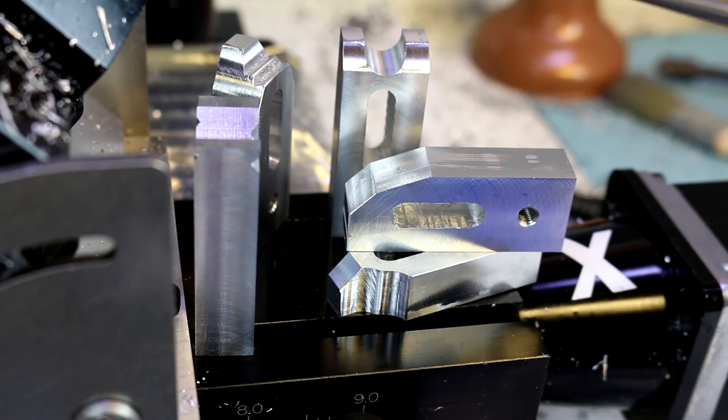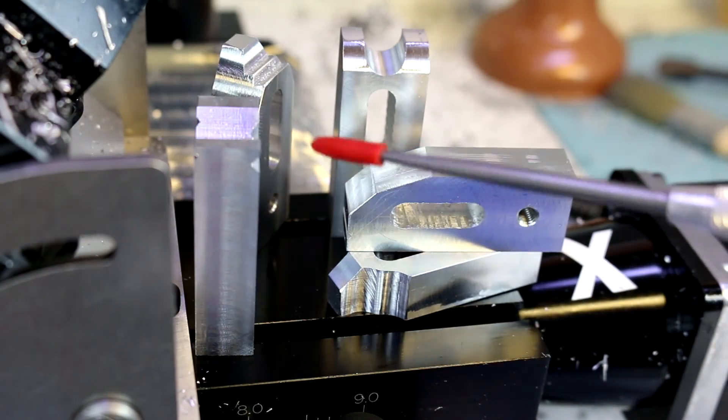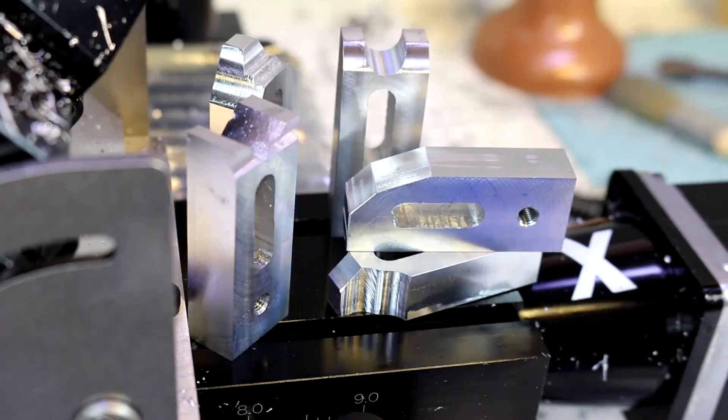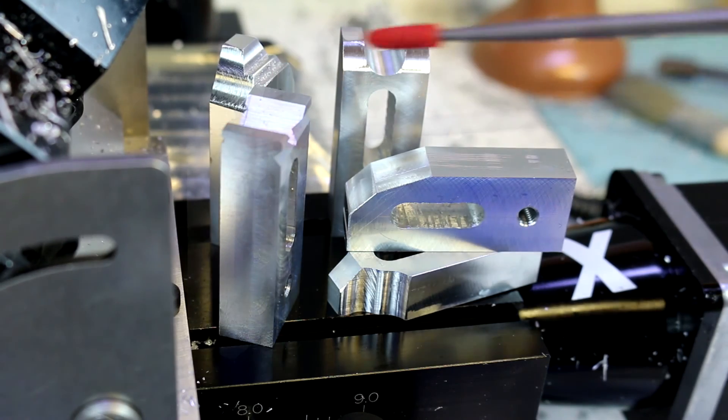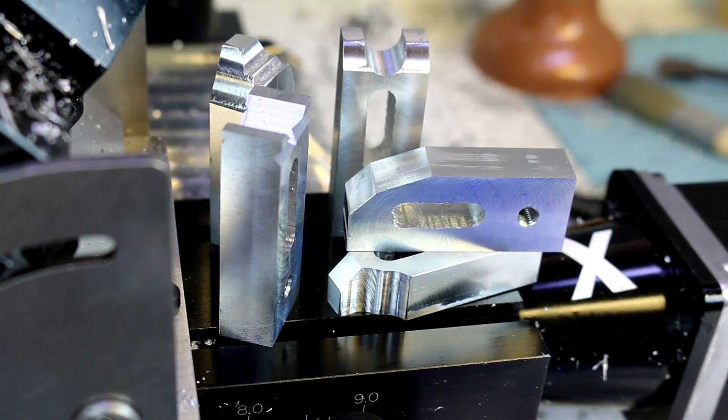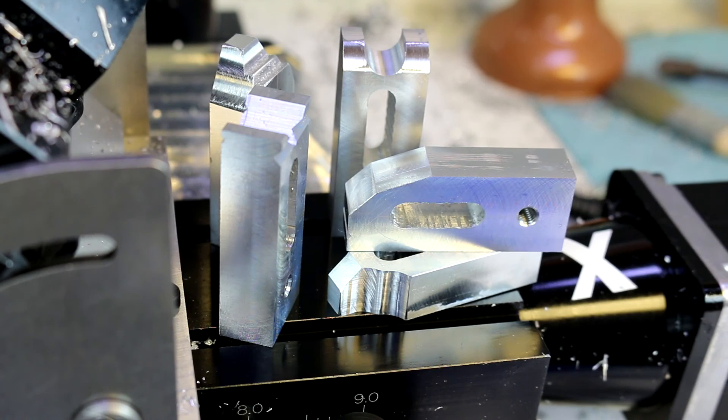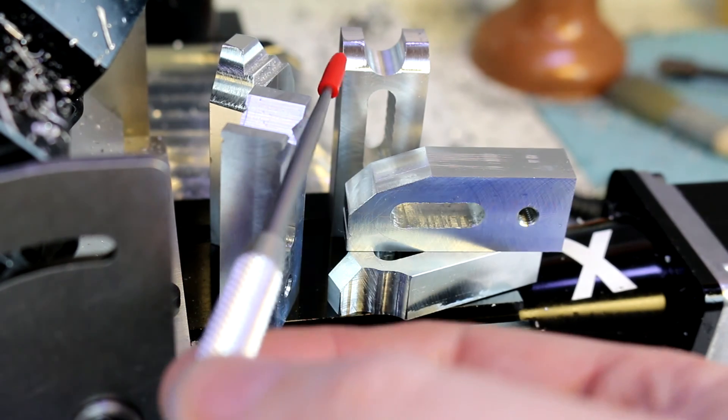And then on this one I've got a V-notch that I cut, but then I've also cut V-notches along either face. So this would allow us to hold a small round piece and clamp it, say, down to the table like that, or down to another work surface.